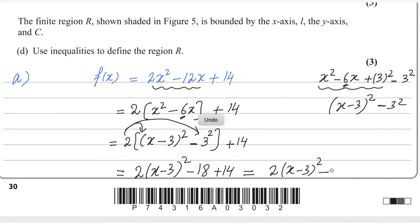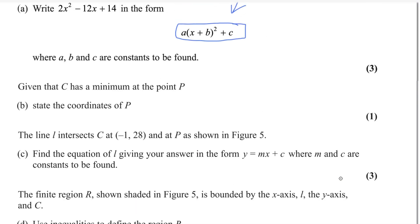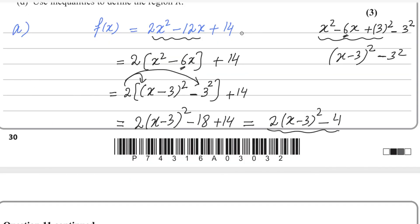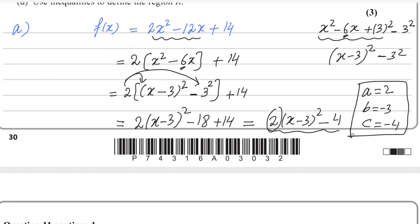Sorry — this will be negative 4, because -18 + 14 = -4. So the required answer is 2(x - 3)² - 4. You can identify the values: a = 2, b = -3, and c = -4. That is the answer for the first part.